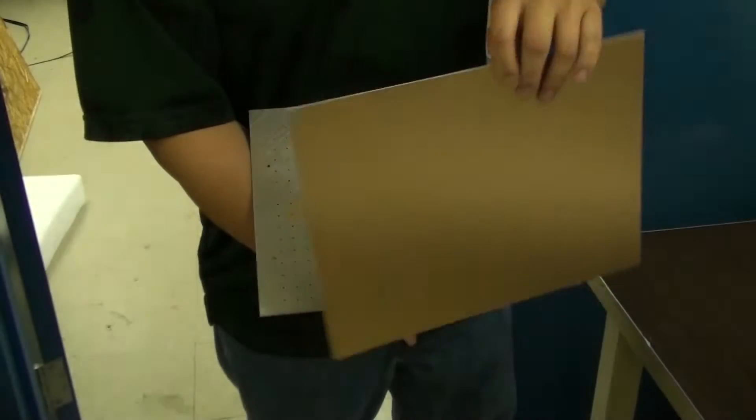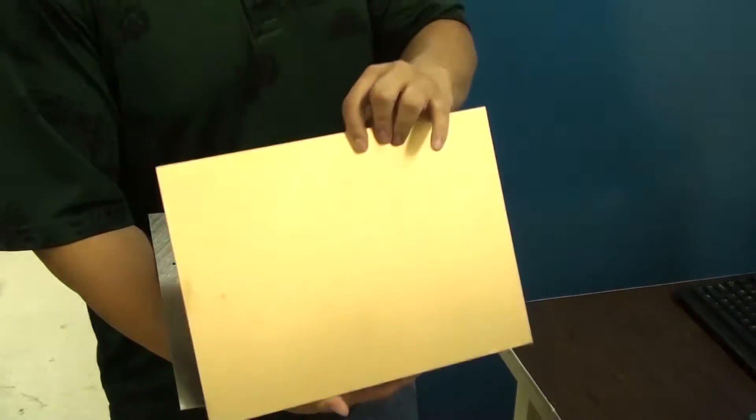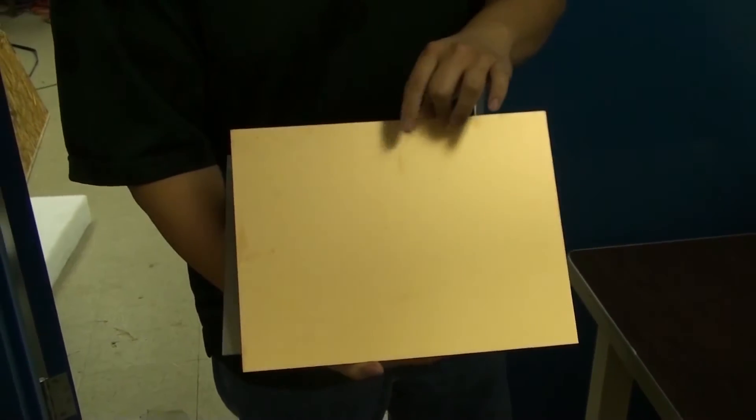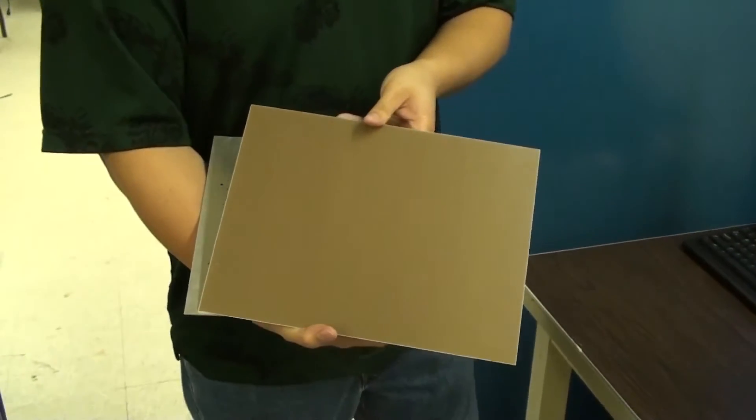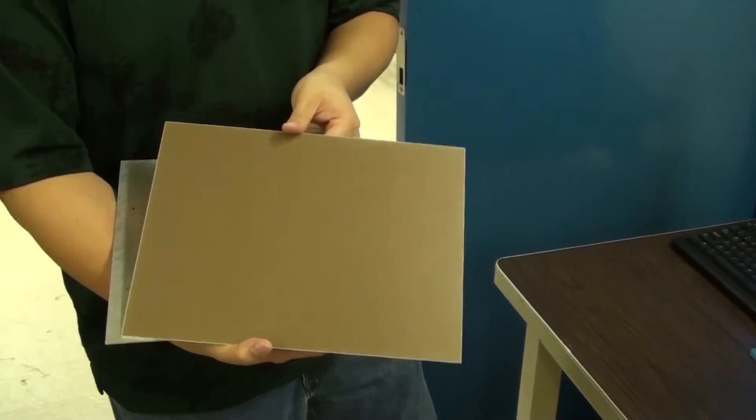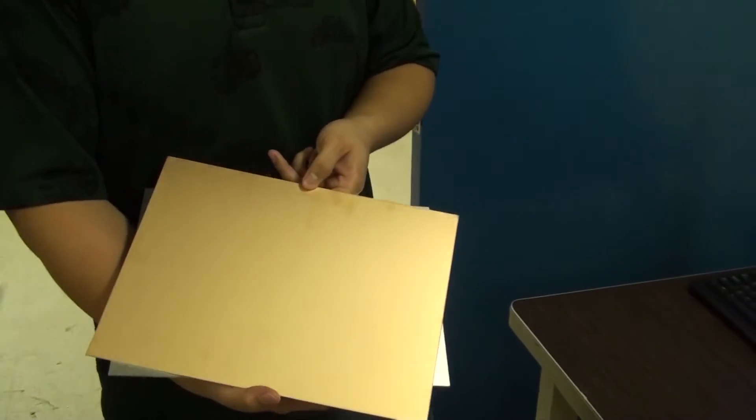Then here we have a copper clad board. This board in particular is a 59mm thick single-sided copper clad here. You have a copper layer here and a blank layer here. This is great for single-sided boards because you don't have to do anything on this side. All you have to do is just mill out one side and you're done.